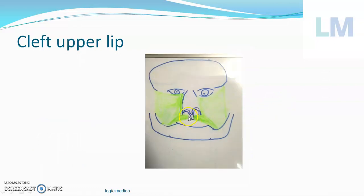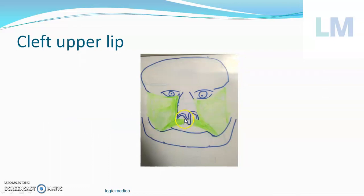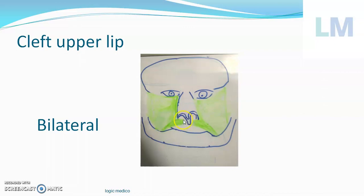Next, there is a gap just below the right nostril — only on one side. The maxillary process has failed to unite with the medial nasal process of that one side — this is called unilateral cleft lip. If the same failure happens on both sides, both maxillary processes fail to unite with the medial nasal processes, resulting in bilateral cleft lip with gaps beneath each nostril. In bilateral cleft lip, the medial nasal processes do unite to form the philtrum, but the lateral portions are incomplete.